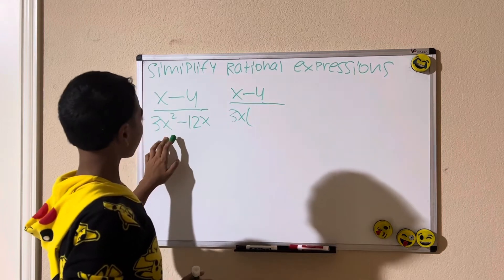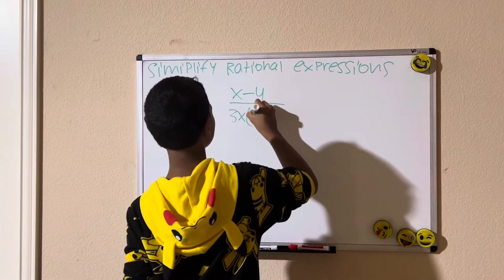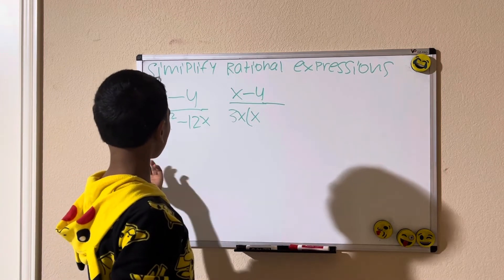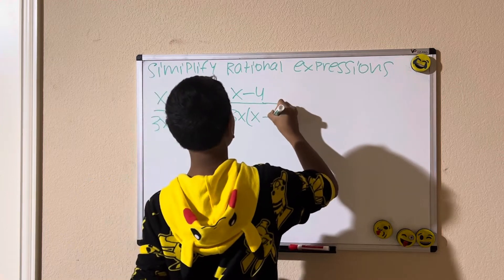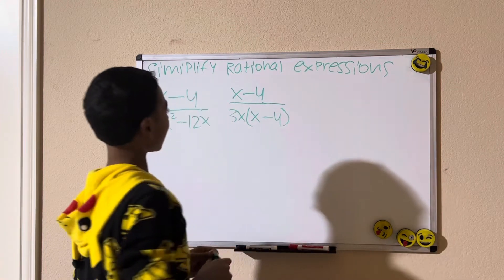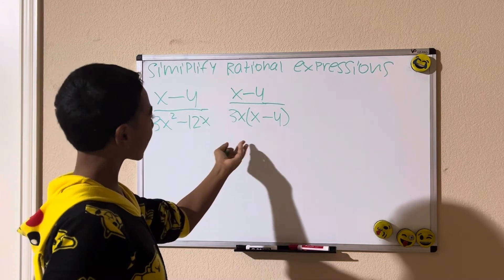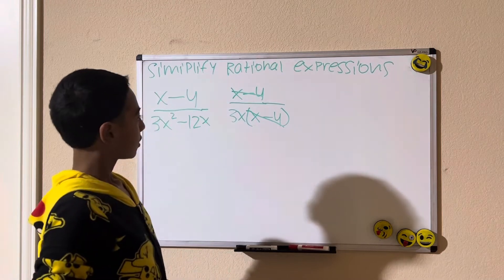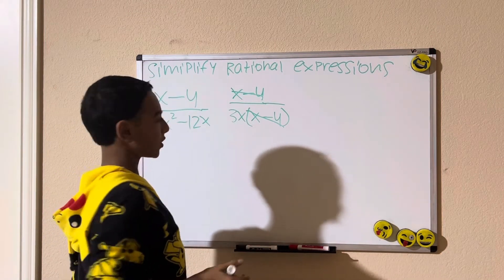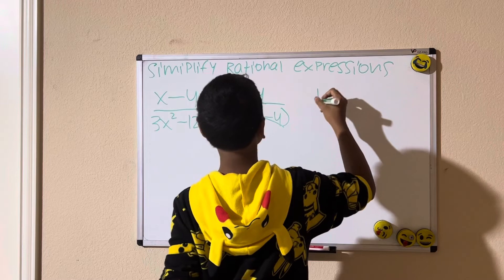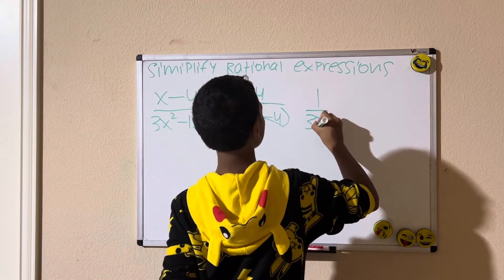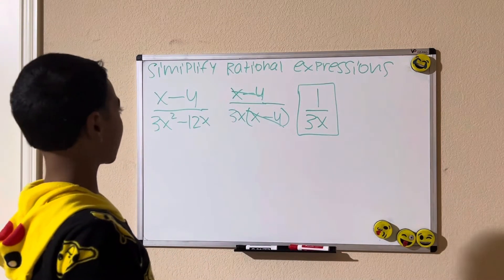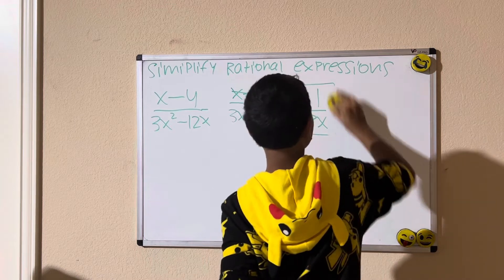3x squared divided by 3x is x. See my factoring video if you need help. And negative 12x divided by 3x is minus 4. So we have (x minus 4) divided by 3x times (x minus 4). The (x minus 4)s cancel out, and if there's nothing in the numerator it's a 1, so we're left with 1 over 3x. That is our solution.